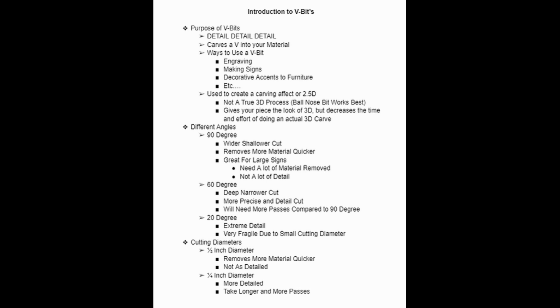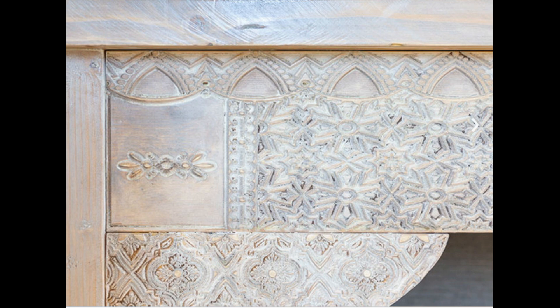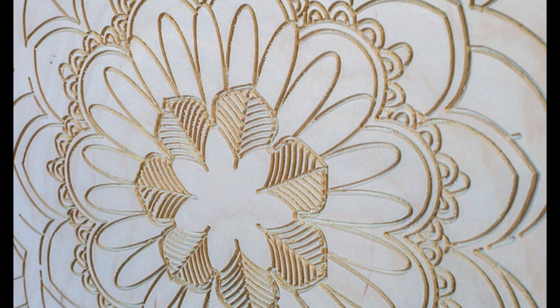In this video I'm going to do an introduction to V bits. If you haven't watched my previous video where I went into end mills, I highly recommend going back and watching that. V bits are used for very detailed designs — they carve a V into your material. The ways that you can use a V bit are for engraving, making signs, decorative accents to furniture, and the possibilities are endless.